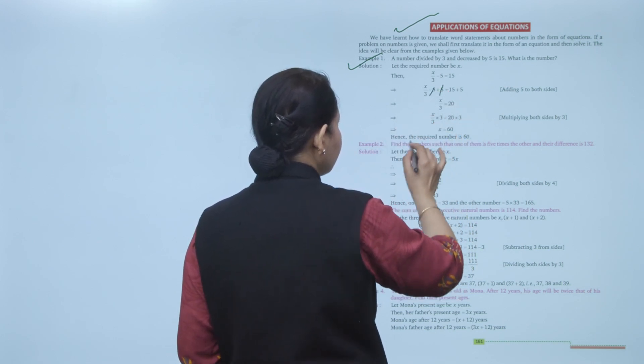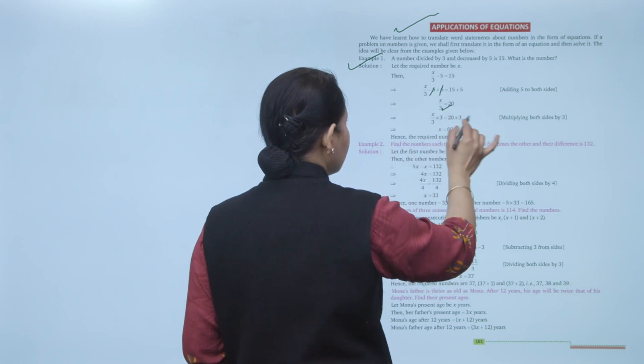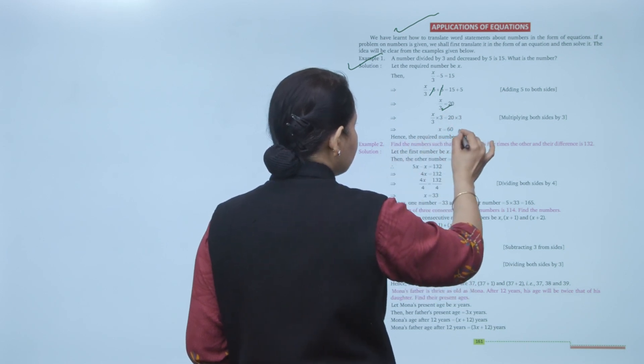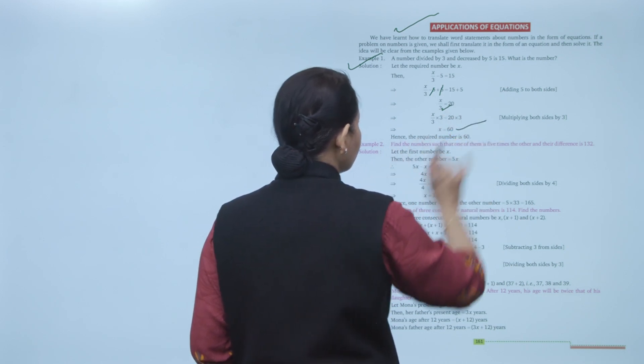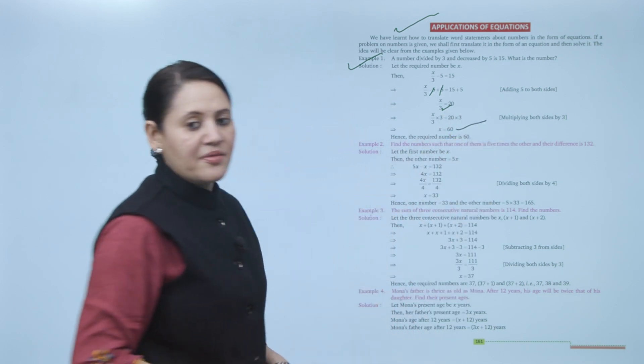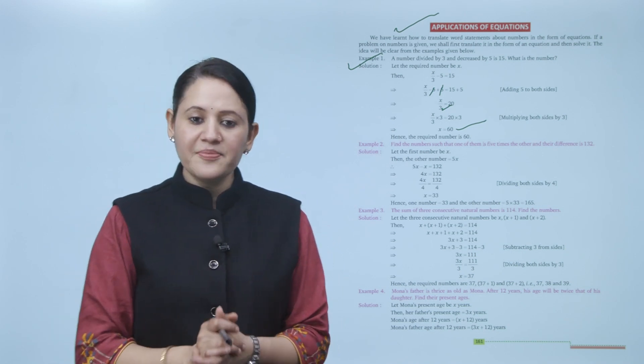Adding 5 to both sides: x divided by 3 equals 55. Cross-multiplying: x equals 55 times 3, which equals 165. Wait — solving correctly: x divided by 3 equals 55, so x equals 165. Hence the required number is found. Practice to confirm. (Note: the lesson states the answer as 60 via cross-multiplication giving 20 times 3.)